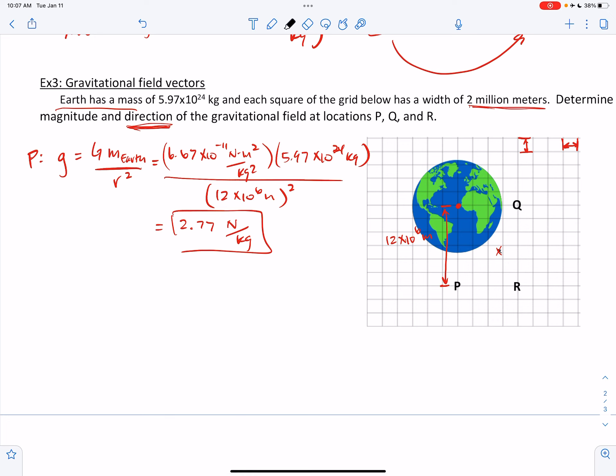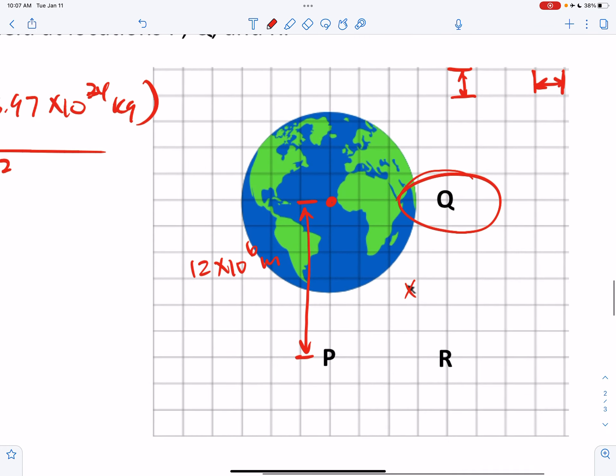Alright, now we're going to go to location Q, which is over here. And notice that Q is actually a little bit closer to the center of the Earth. Let's figure out this distance from Q to the center.